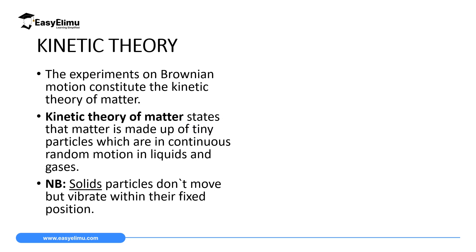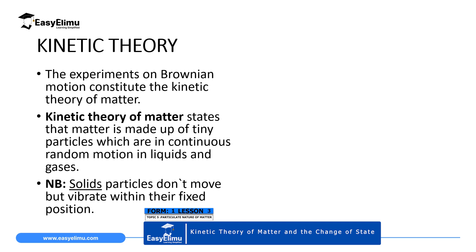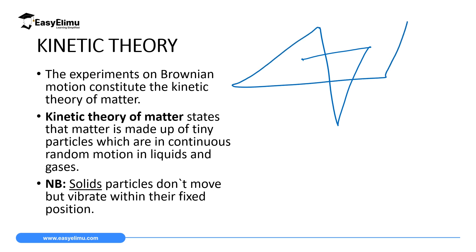So what is kinetic theory of matter? If you were keen on the previous lesson when we discussed Brownian motion, you remember we observed particles of liquids and gases moving in a random manner. If you had some smoke particles, they were moving randomly inside the smoke cell. They behaved like that because they are being knocked by invisible particles — the particles of air in the smoke cell and the particles of water in the experiment where we had a beaker carrying some dust particles.